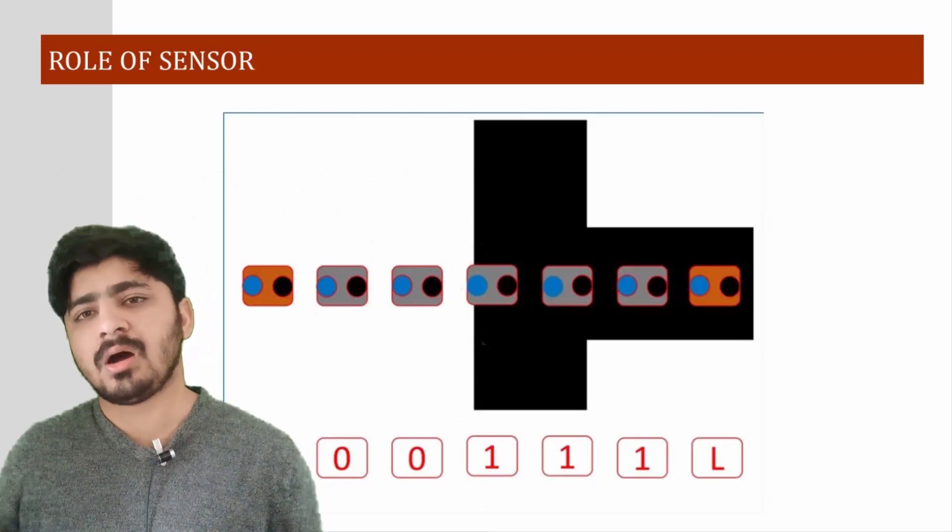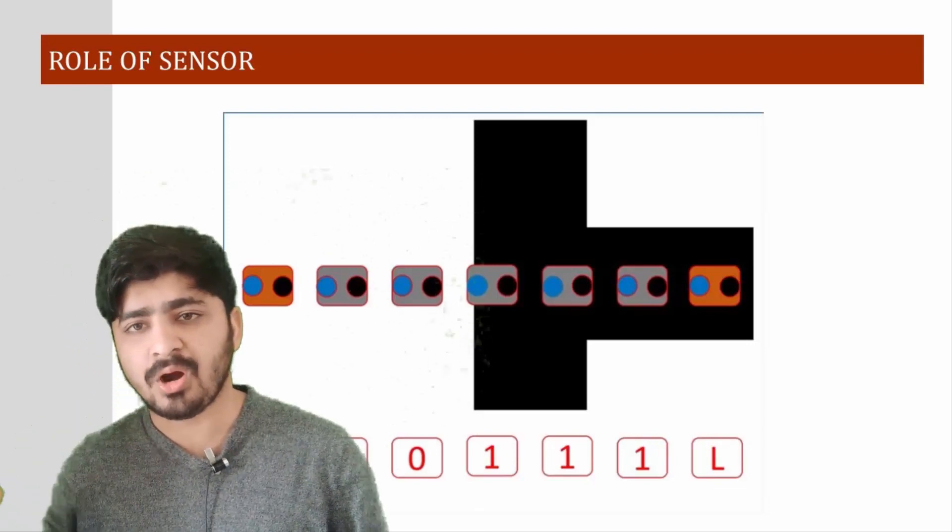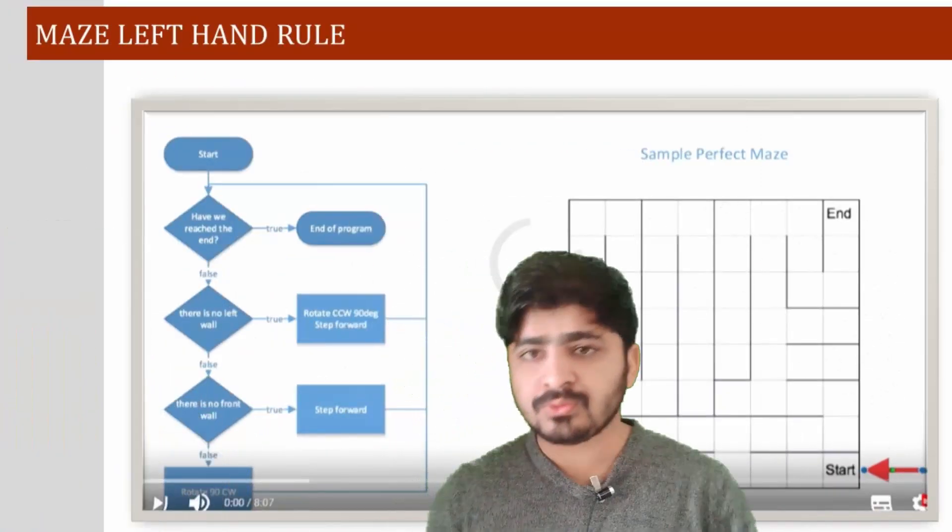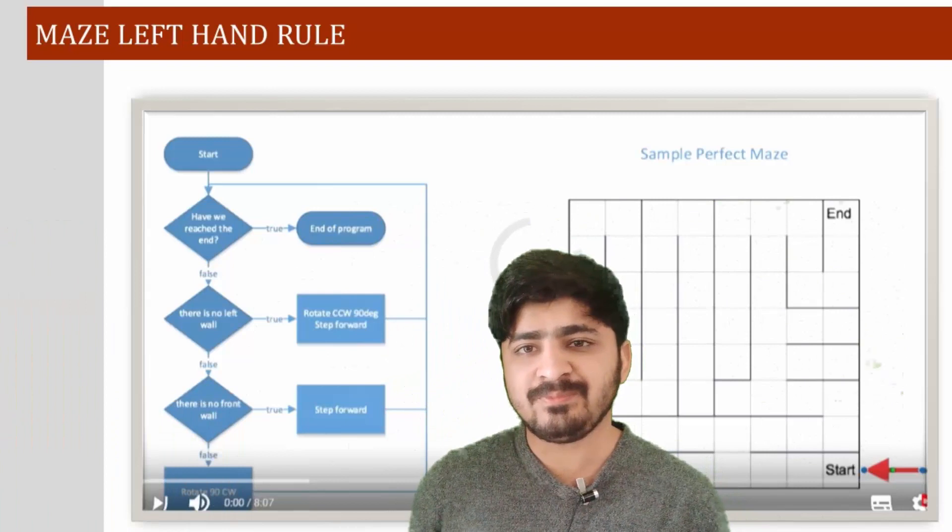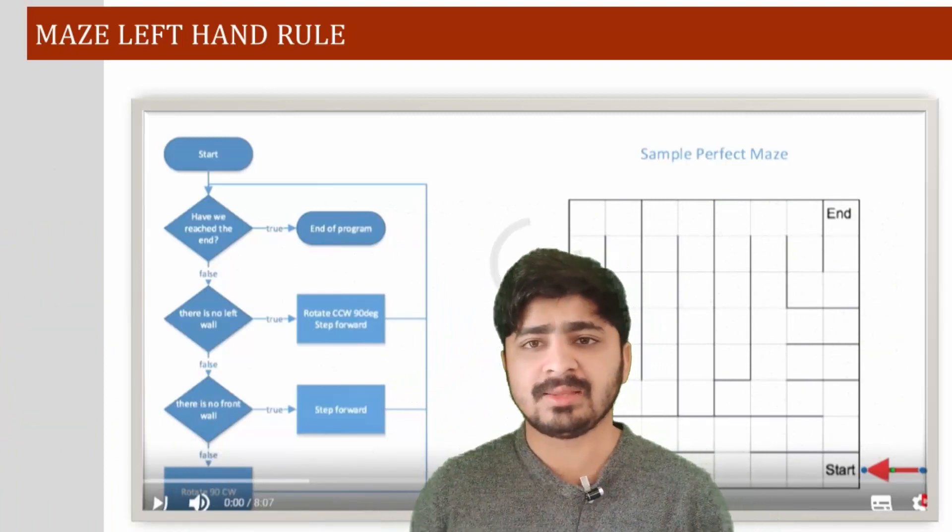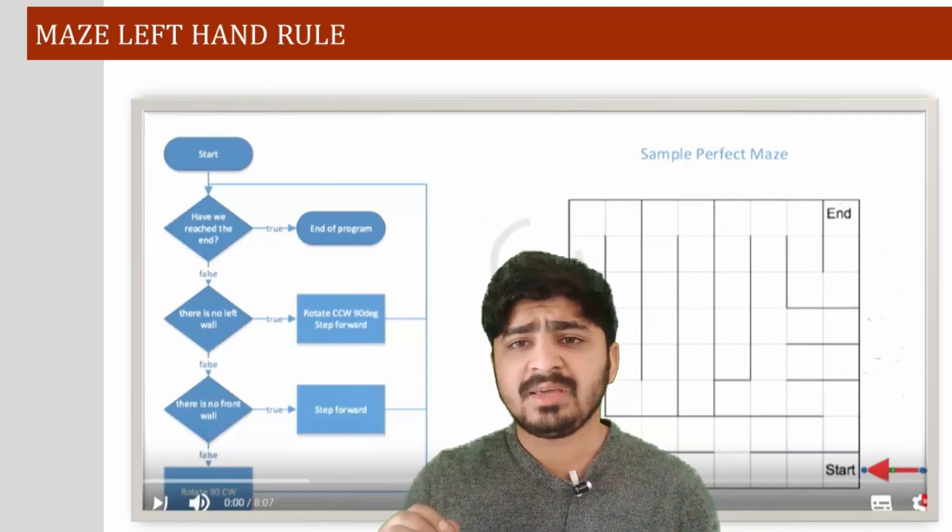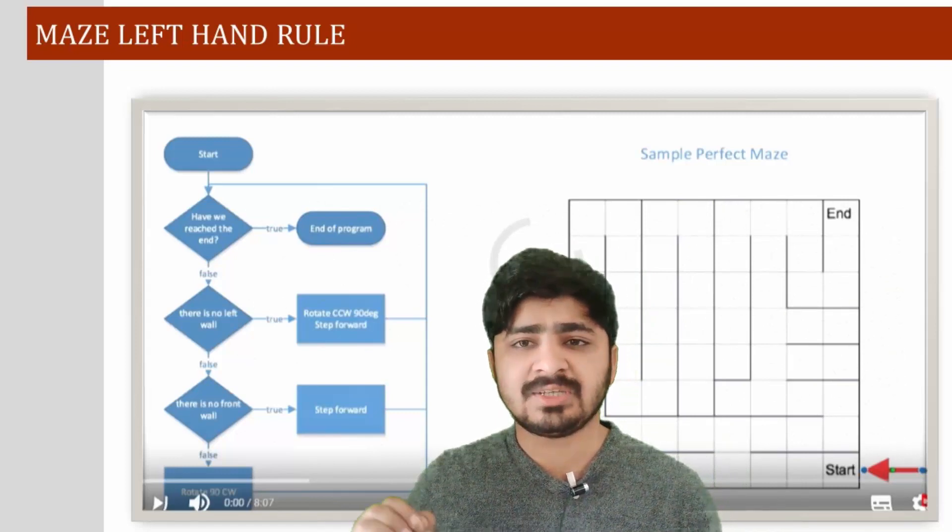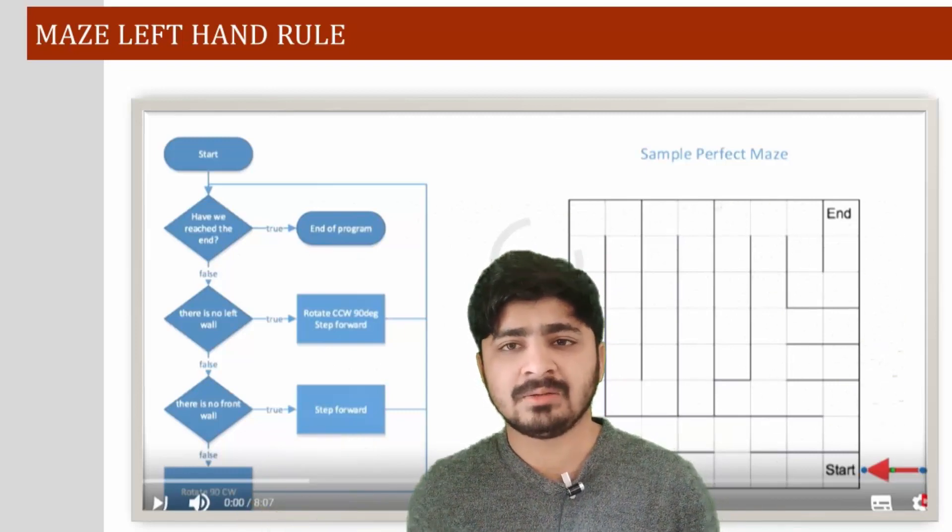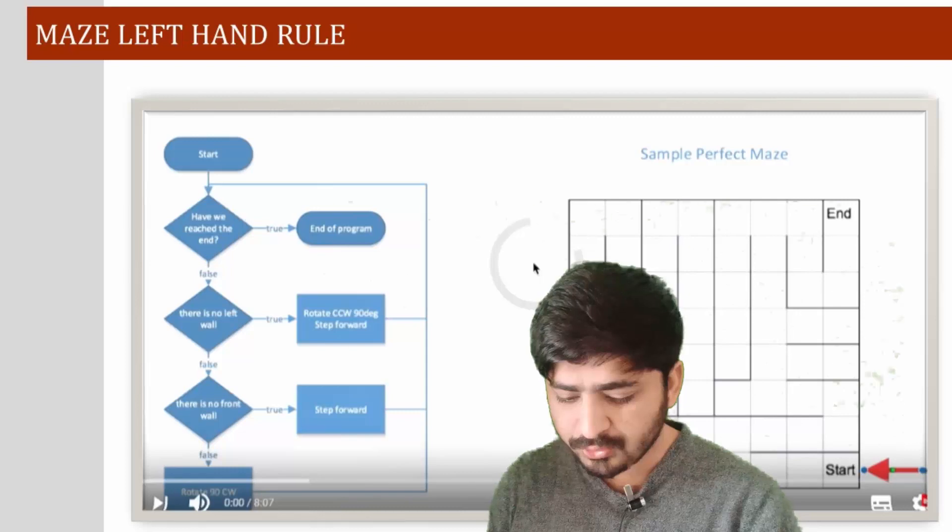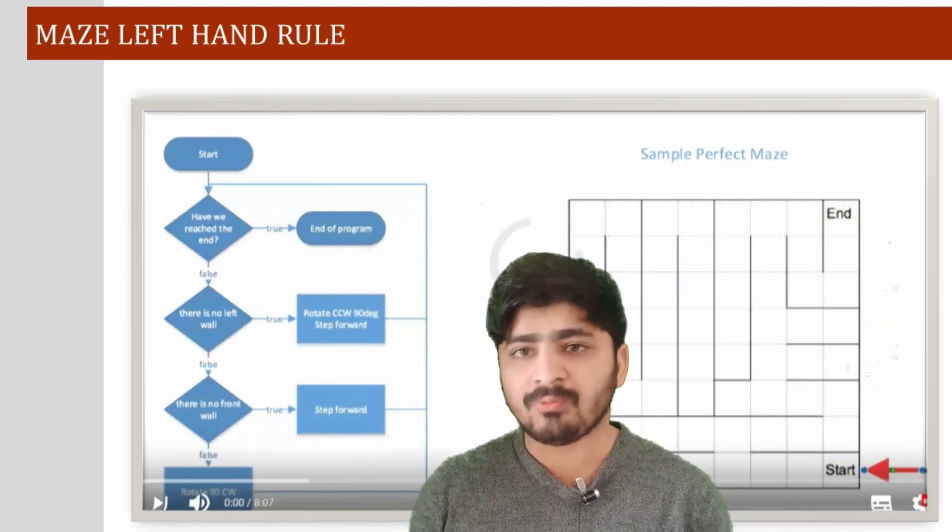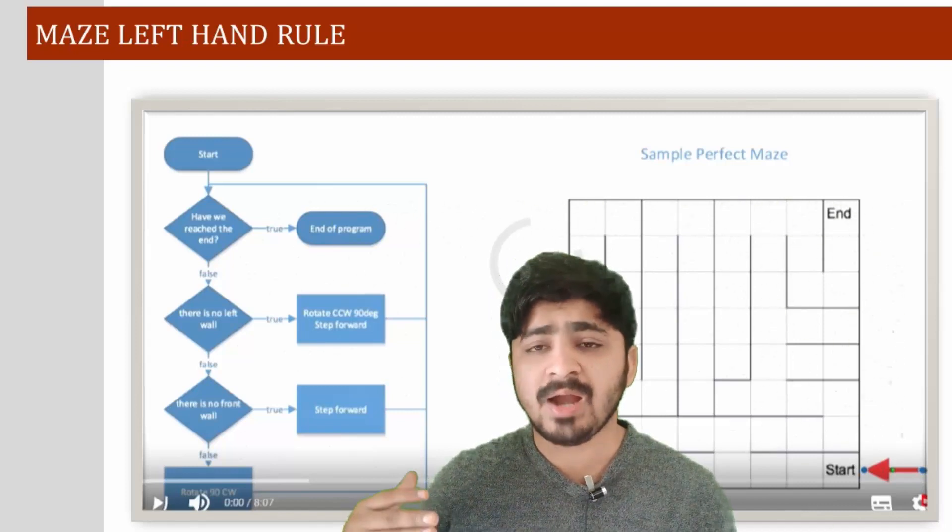To solve the issue, we are using maze left hand rule to store the data. What it will do on each step is check its left hand wall for any object. Let's talk about the flow chart of the code. For more information, I will provide the video source in my article.